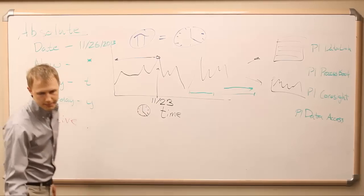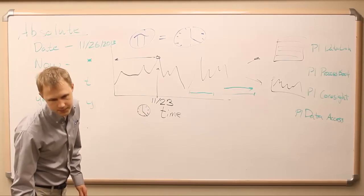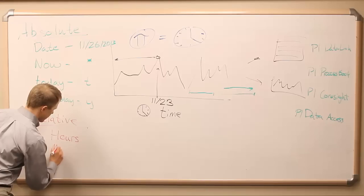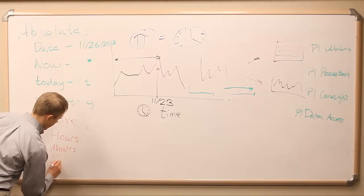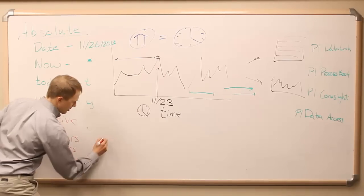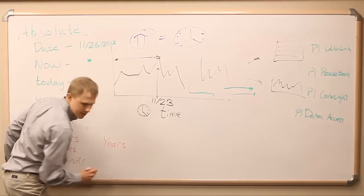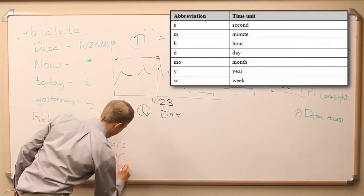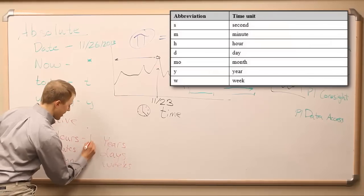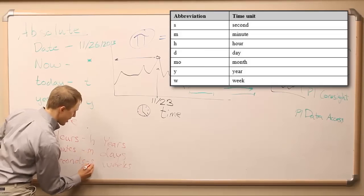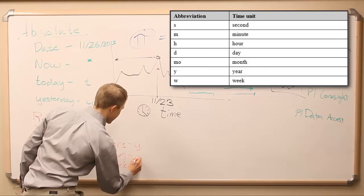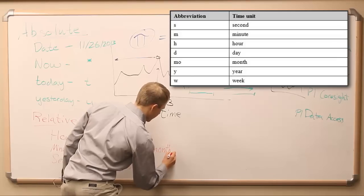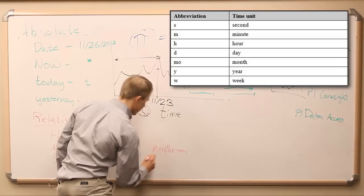And in PI, we have a couple of them. And they are hours, minutes, seconds, years. What else do we have? We have days, weeks. And these each have their own abbreviations. So, hours is H. Minutes is M. Seconds is S. Years is Y. Days is D. Weeks is W. And there's also months. Months is MO. Right.